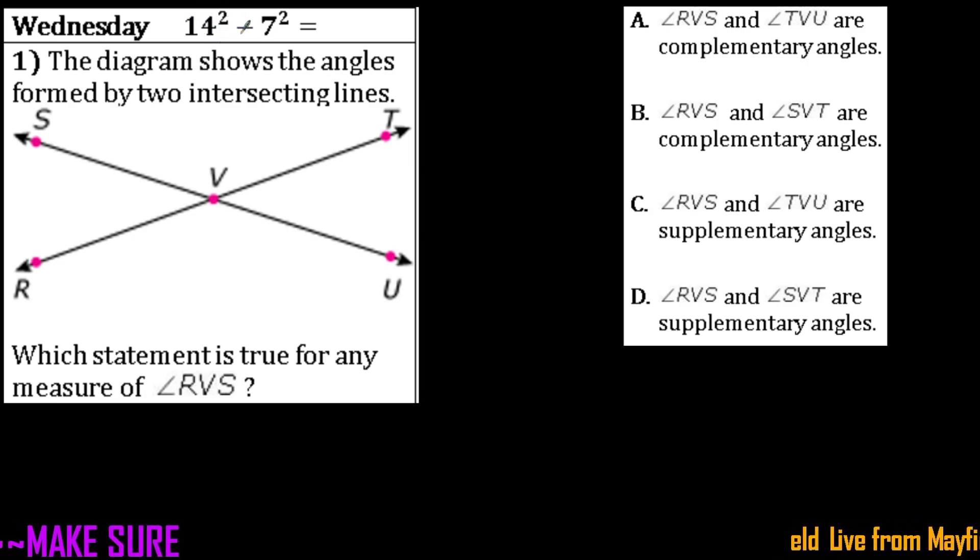So it says 14 squared minus 7 squared. And so we know that 14 squared, you know what, let me actually get my Desmos calculator out just in case we have any discrepancies on that.